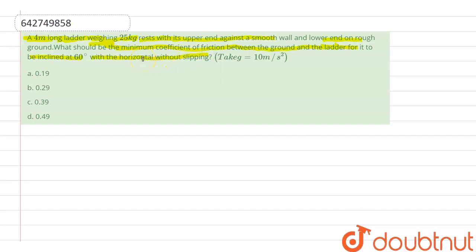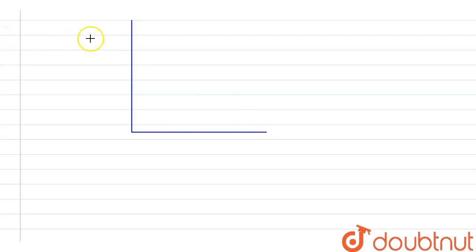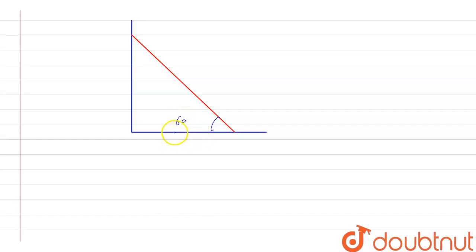We have to find the coefficient of friction when the ladder is not going to slip. Let's draw the diagram. Here is the wall and the ground. The ladder is making an angle of 60 degrees with the ground. The ground surface is rough, so there is friction between the ground and the ladder, while the wall surface is smooth with no friction.